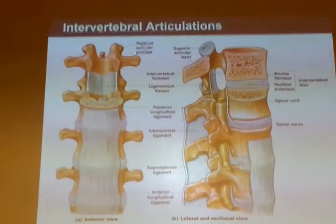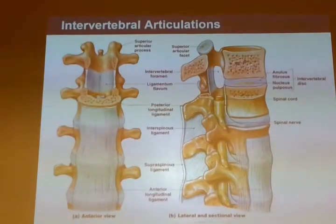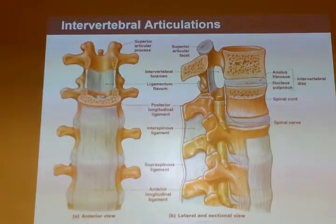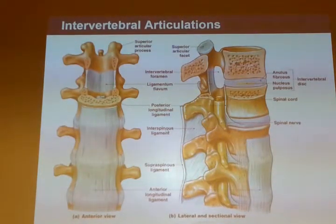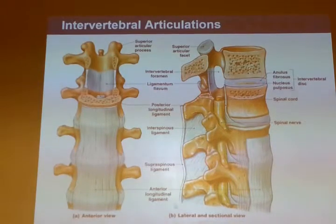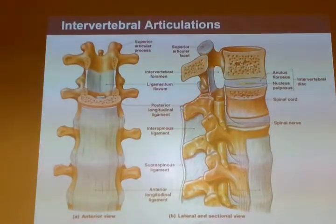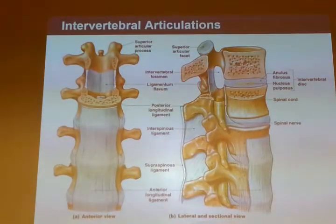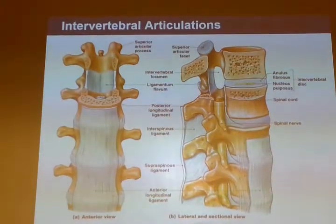Between your spinous processes you're going to have ligaments, and also a ligament right on top of the spinous process. Inter, meaning between, spinous ligaments — spinous referring to the spinous process — and then supra, on top of the spinous process, the supra-spinous ligament. That supra-spinous ligament, when it crosses the cervical region, becomes the ligamentum nuchae, which is a Latin-elastic ligament, so you get good stretch back there.